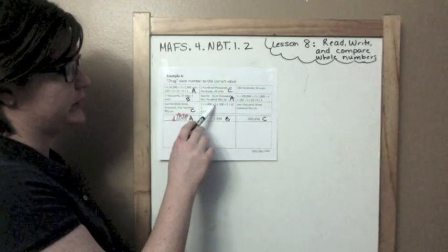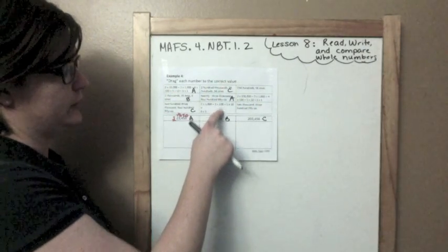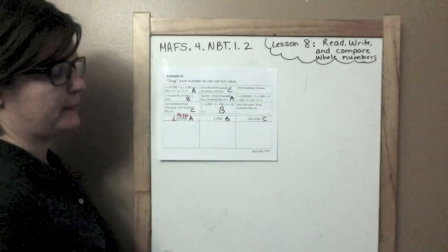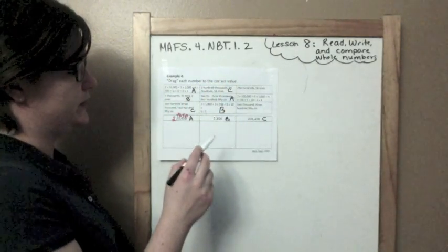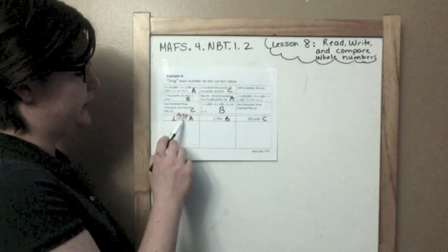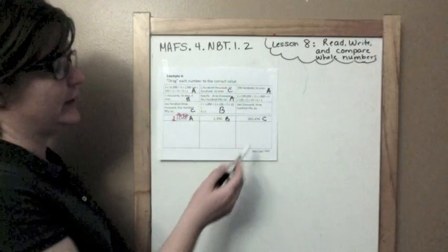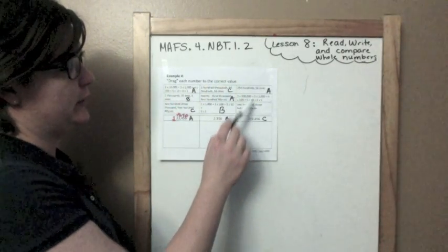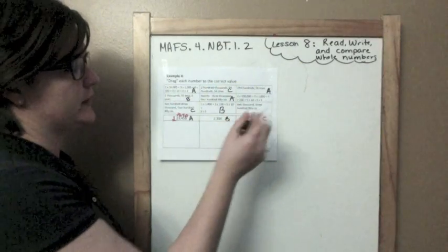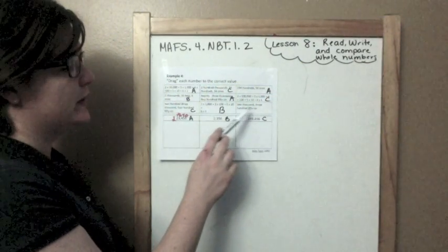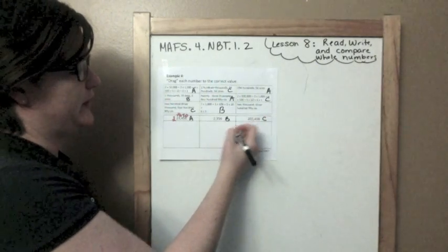2 times 1,000 plus 3 times 100 plus 5 times 10 plus 6 times 1. So where does 2 go? In the 1,000s place — right here. 3 is in the 100s place, 5 is in the 10s place, and 6 is in the 1s place. That's B. 234,00s and 56, 1s — 2 times 100,000. I already know that because this is the only 2 in the 100,000s place. We've got 3 in the 1,000s, 4 in the 100s, 5 in the 10s, 6 in the 1s — so C. And finally, 2,356 goes with B.